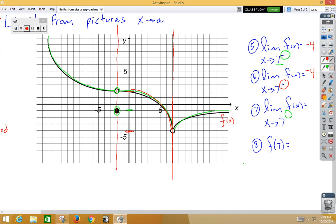Two-sided limit. We compare the left side and the right side. Notice that it's the same. So two-sided limit is negative 4.